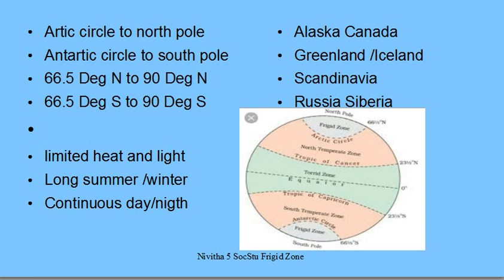The characteristics of the Frigid Zone include limited heat and light, because the sun's rays come at a slanting angle and from a greater distance and are not strong enough. You also have long summers and winters, and you have continuous days or nights. These are the main features.